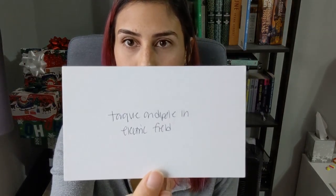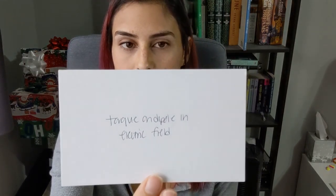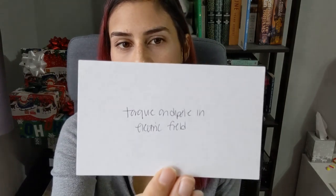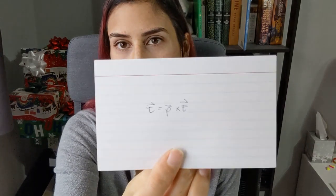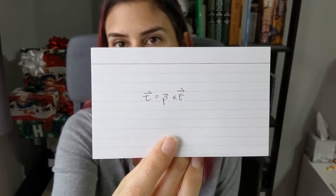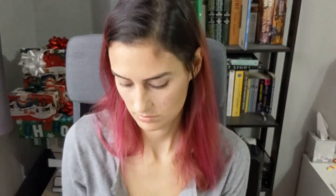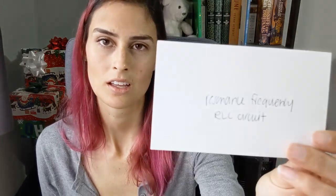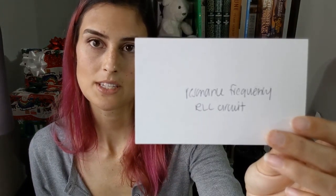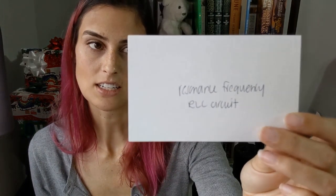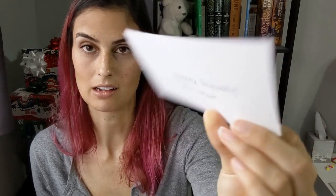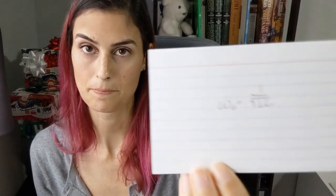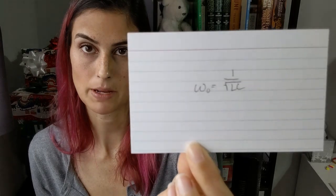The torque on a dipole in an electric field: tau equals p cross E, where p is the dipole moment. The resonance frequency of an RLC circuit: omega naught equals 1 over the square root of L times C — inductance times capacitance.